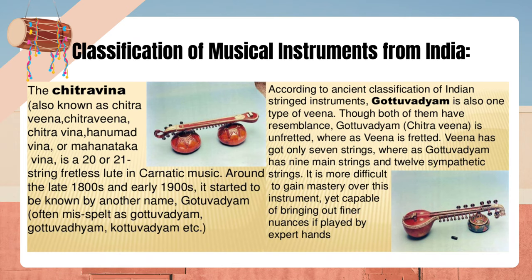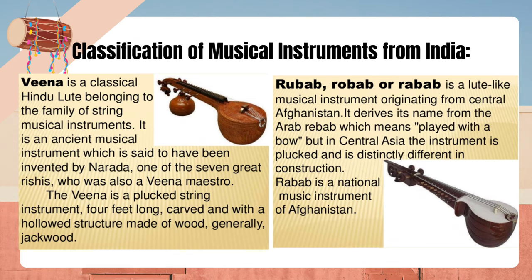The Chitraveena is more difficult to gain mastery over, yet capable of bringing out finer nuances if played by expert hands. Veena is a classical Hindu lute belonging to the family of string musical instruments, an ancient instrument said to have been invented by Narada, one of the seven great rishis. The Veena is a plucked string instrument, four feet long, carved and with a hollowed structure made of wood, generally jackwood. Rubab, also called Robab or Rebob, is a lute-like musical instrument originating from central Afghanistan. It derives its name from the Arab Rebob meaning played with a bow, but in Central Asia the instrument is plucked. Rabab is the national music instrument of Afghanistan.